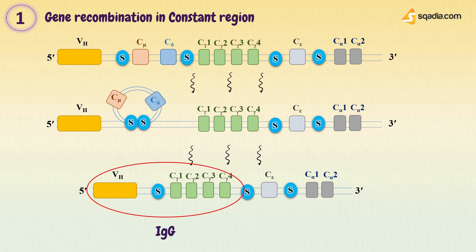Similarly, if this switching is between S-regions upstreaming mu and gamma exons, then it will give rise to the antibody of class IgE. And if switching is between S-region upstreaming mu and epsilon exon, the antibody formed will belong to class IgA. So the fact is, whatever CH exons bind with the variable region, the antibody will be named after that, as it belongs to that particular class.